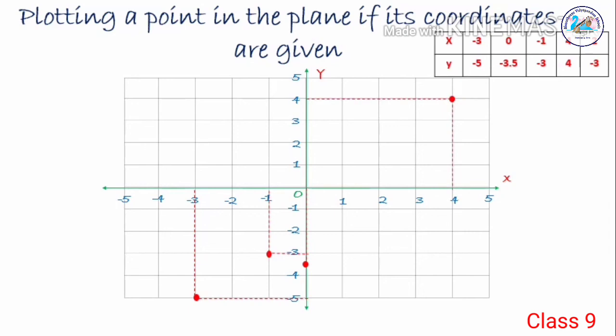Next is (2, minus 3). x-value is 2, y-value is minus 3. x-axis 2 is here and y-axis minus 3 is this one. Both the lines will meet here. (2, minus 3) is marked. Hope it is clear. My dear students, in today's session we have discussed the basic concepts of coordinate geometry. Hope it is clear for you all. If you have any doubts, please note them down. We will discuss them during the online session. Thank you for watching.